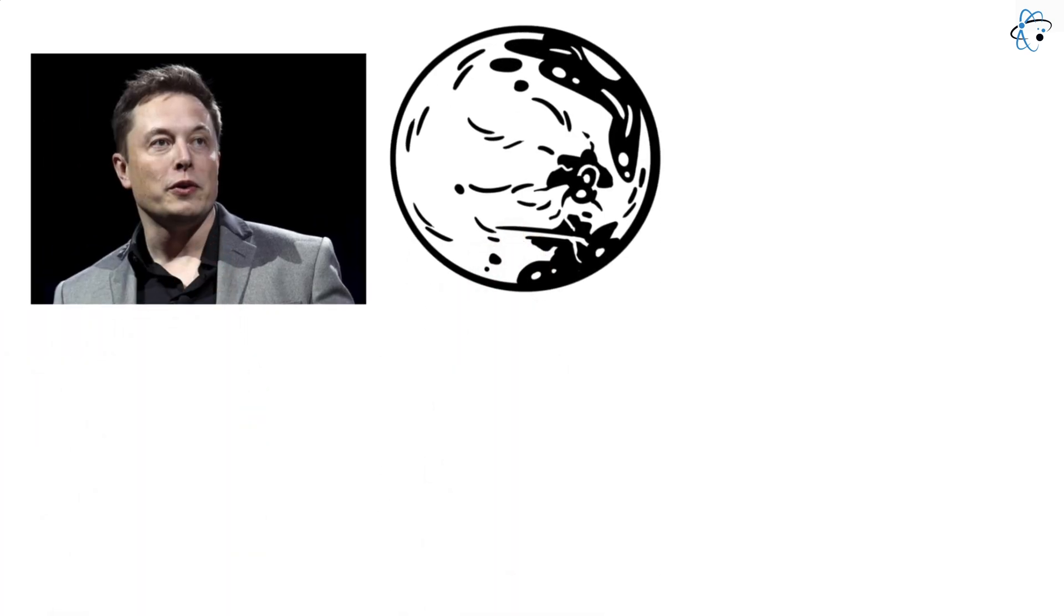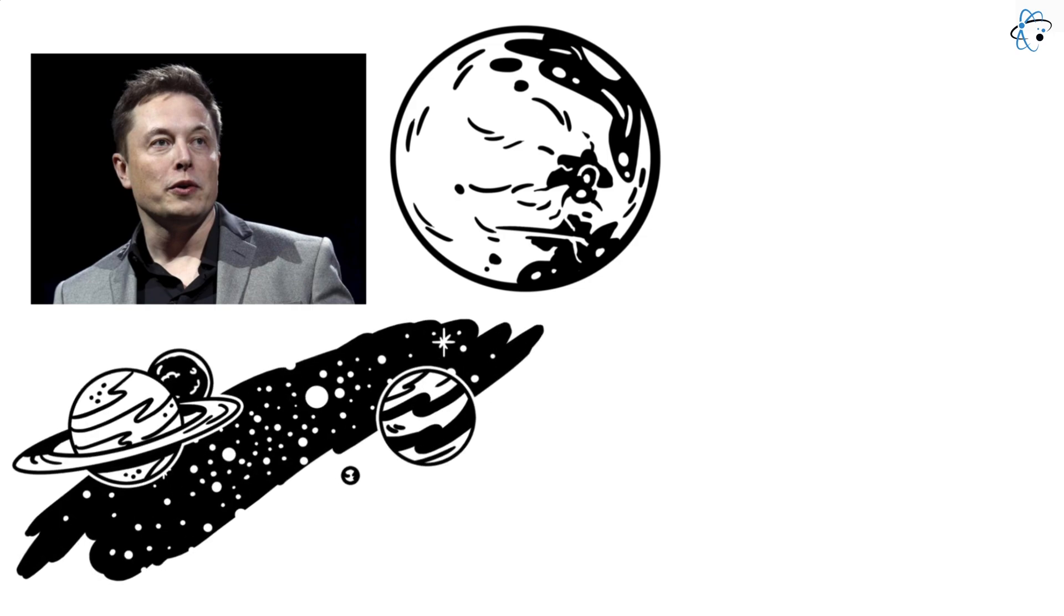Elon Musk's vision is clear. He aims to settle 1 million people on Mars and transform humanity into a multi-planetary species. But how can life be made sustainable on the Red Planet?